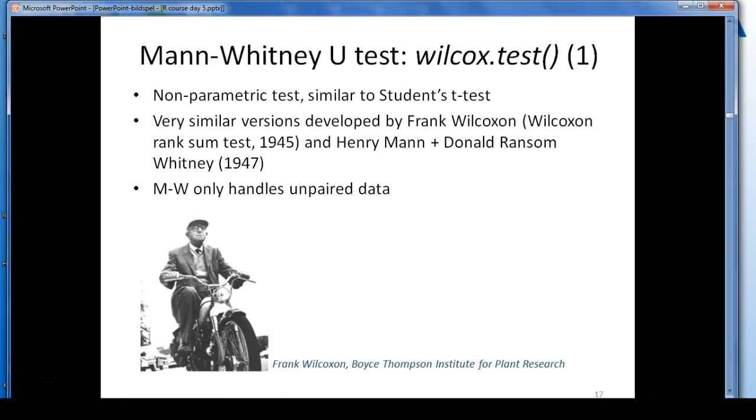The Wilcoxon signed rank test was developed by Frank Wilcoxon, the man on the motorbike here, in 1945. And two years later, Henry Mann and Donald Ransom Whitney presented a very similar test called the Mann-Whitney U test, which actually did not add anything to the already existing Wilcoxon test, but was more restricted since it could only deal with unpaired data, while the Wilcoxon test accepts both paired and unpaired data.